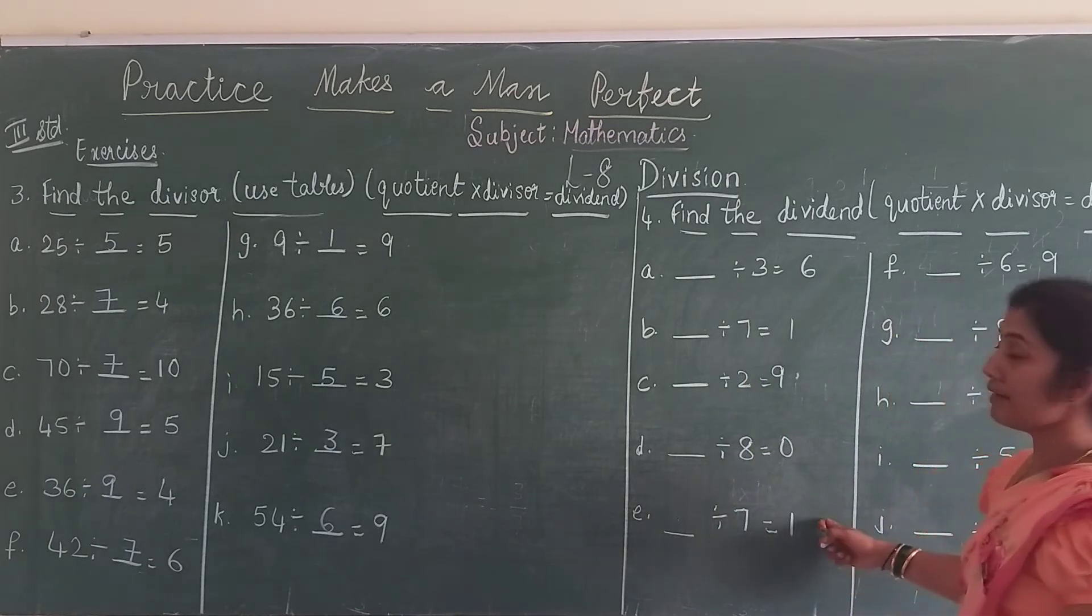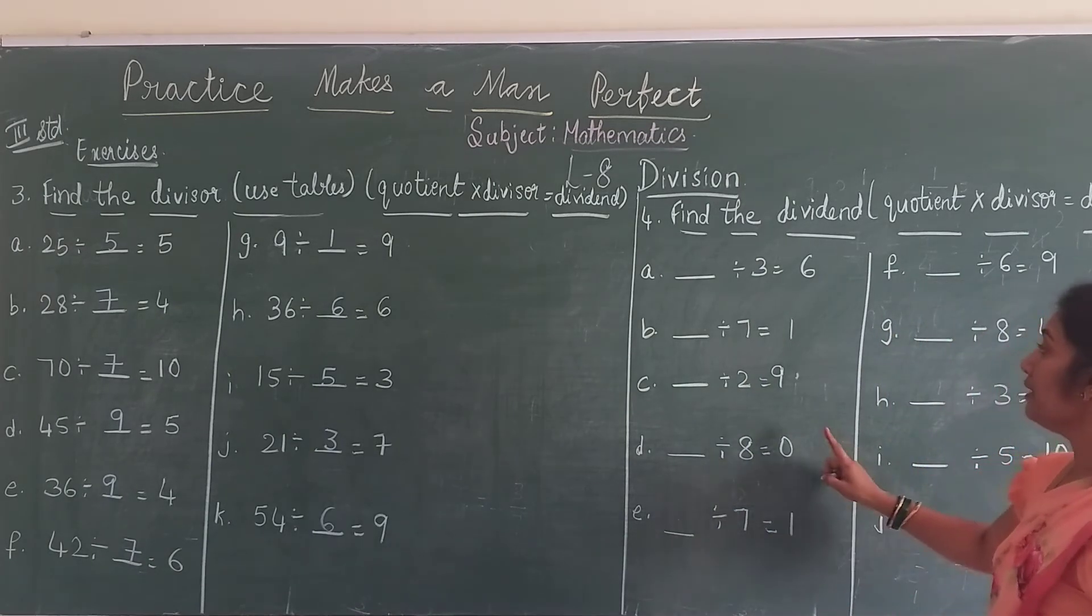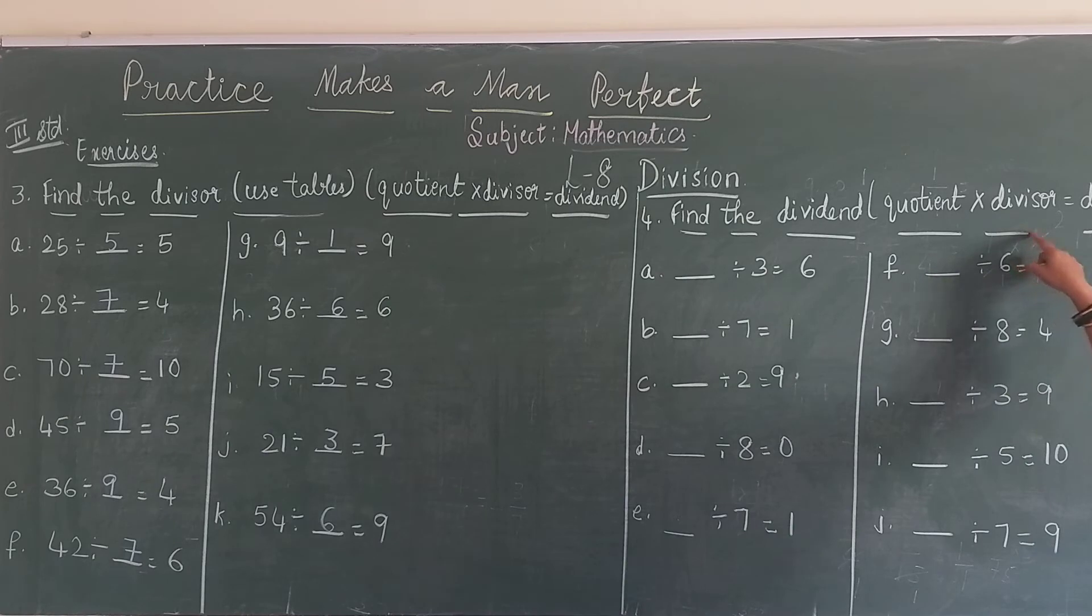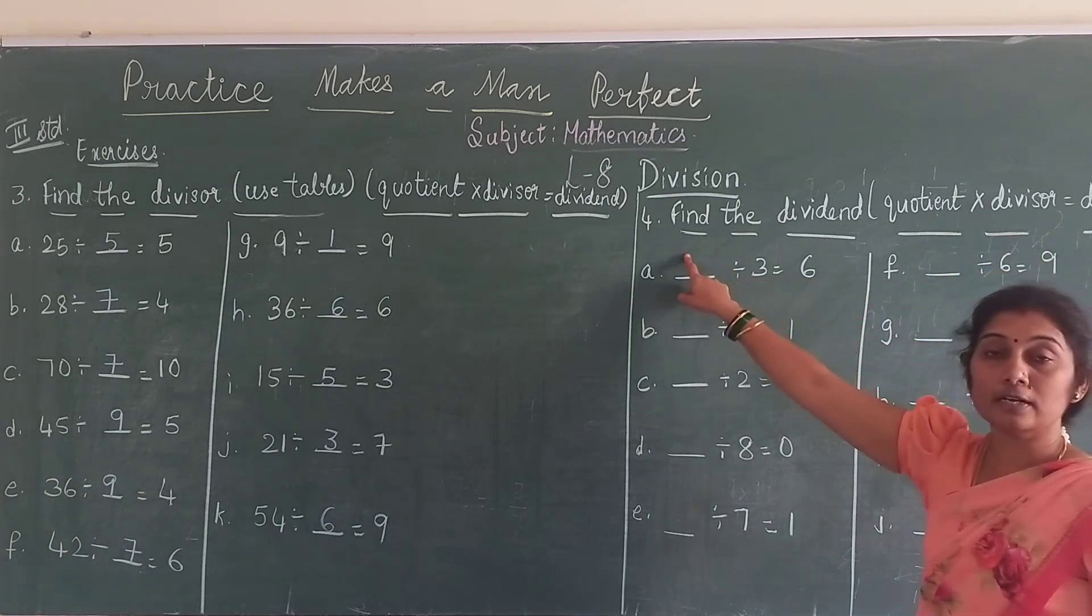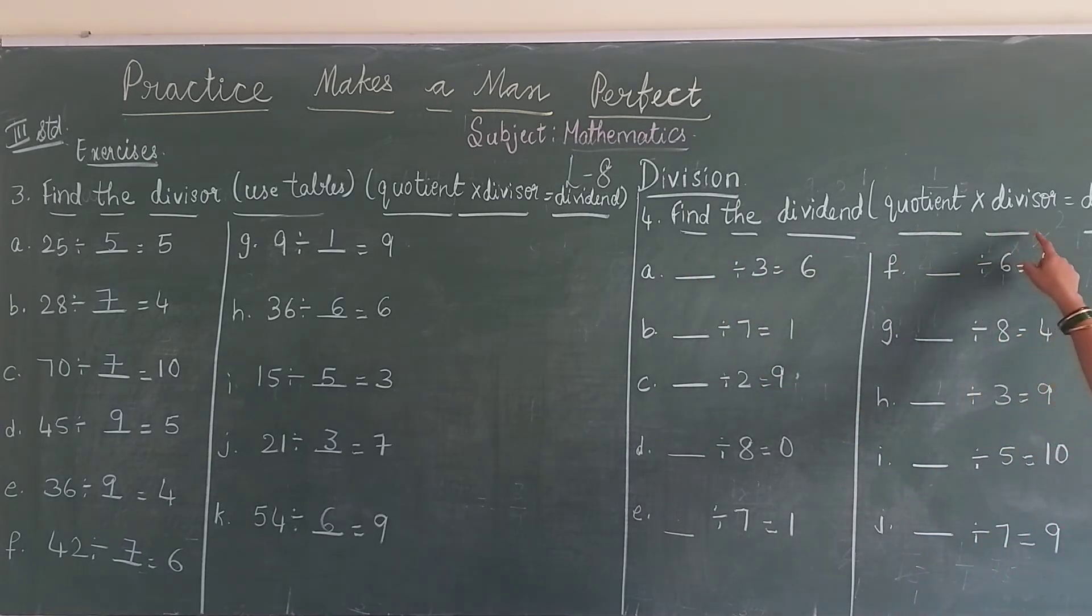So here you have learned what is the divisor using the tables. Here you will find out what is the dividend. Dividend will be equal to quotient into divisor. Always remember quotient into divisor. This is the quotient, this is your divisor. When you multiply these two, you will get your dividend.